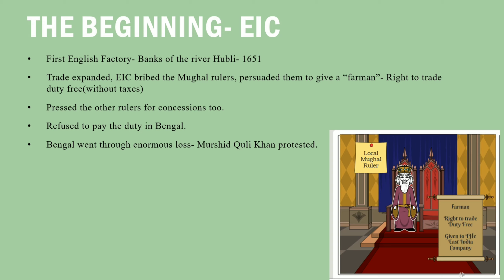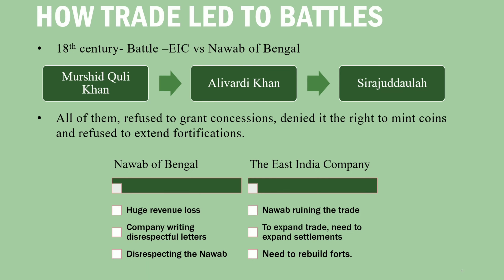The company also started pressing local rulers for more concessions. Some accepted, but some refused. The company refused to pay taxes, and agitated by this, Murshid Quli Khan, the then Nawab of Bengal, protested. The conflict between the company and the Nawab kept rising. Murshid Quli Khan was followed by Aliwardi Khan, and then Siraj ud-Daulah as Nawab of Bengal — they were strong rulers who refused to grant concessions.